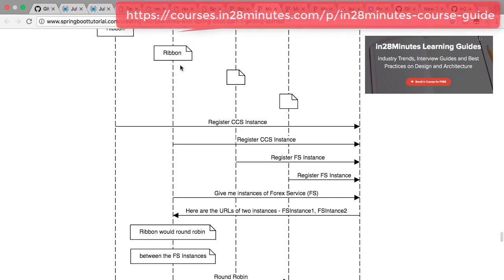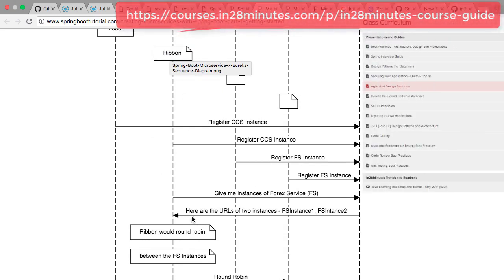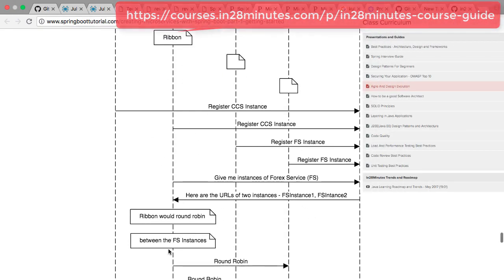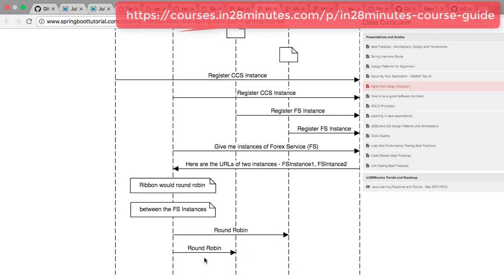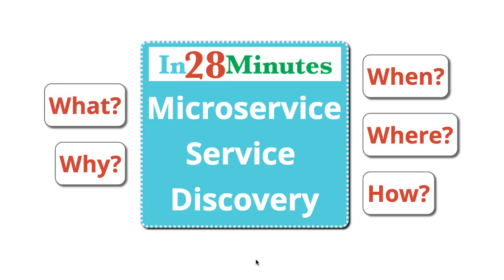What we are using here is a client-side load distribution framework called Ribbon. Ribbon would take those two instances and make sure that the load is distributed between those two Forex server instances. In this video, we talked about service discovery and how you can implement it using a naming server. Dynamic scaling is one of the most important features of microservices, and service discovery enables that.